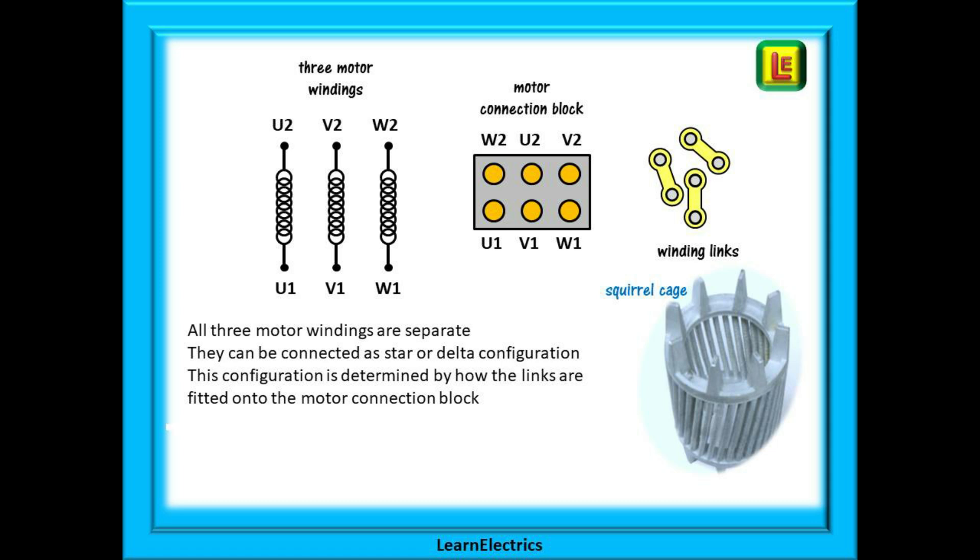Inside a three-phase electric motor, we will have three windings that are not, at the moment, connected to each other. The end of each winding will be terminated at the motor connection block. Notice that the winding order is offset between the top of the block and the bottom. To connect the windings together, we can arrange the winding links on the block in different configurations as shown on the next slides.